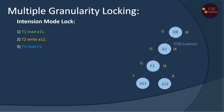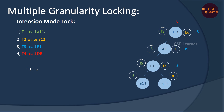T3 is a transaction. A12 gets an Intention Shared lock, propagating up — the database also gets an Intention Shared lock. Fourth, T4 is a transaction that will read the database. Now let's apply these transactions to the database. These transactions will execute — let's see how they execute.